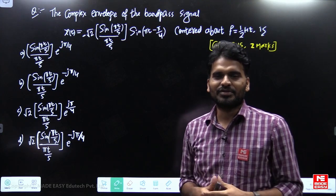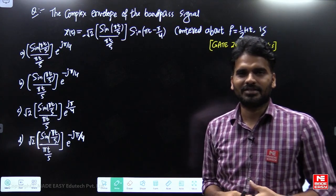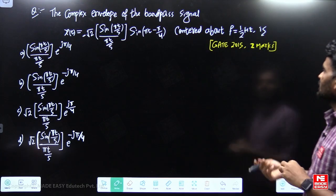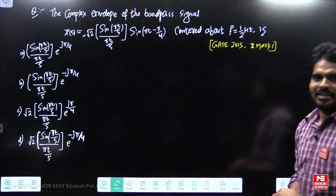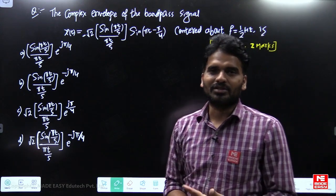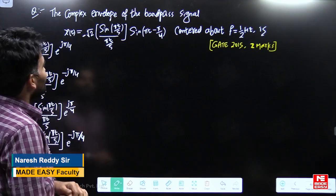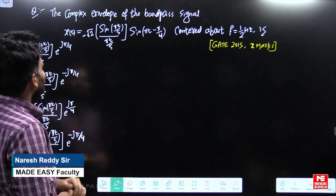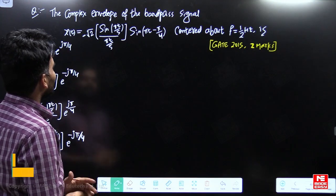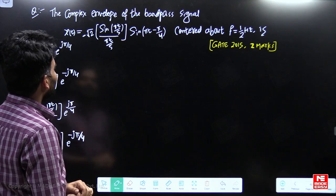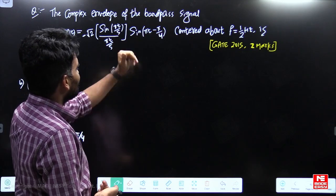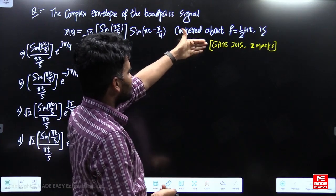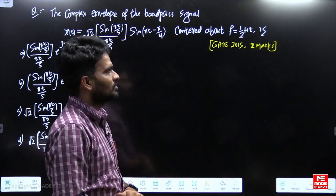Hello students. Here I am going to solve one of the important communication systems questions given in GATE 2015 for two marks. This question is about finding the complex envelope of a given bandpass signal. The signal is centered about f equals 1/2 Hz.